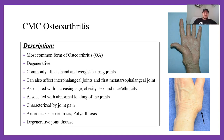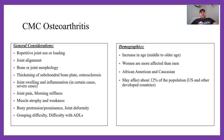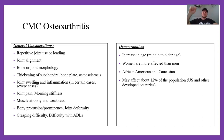Moving on to CMC osteoarthritis — this is the most common form of OA, occurring at the carpometacarpal joint, basically the base of the thumb. OA commonly affects hand and weight-bearing joints, as well as the interphalangeal joints and first metatarsophalangeal joints. OA is associated with increasing age, obesity, gender, race, and ethnicity, and is characterized by joint pain secondary to abnormal loading. You may know this as degenerative joint disease, or DJD.